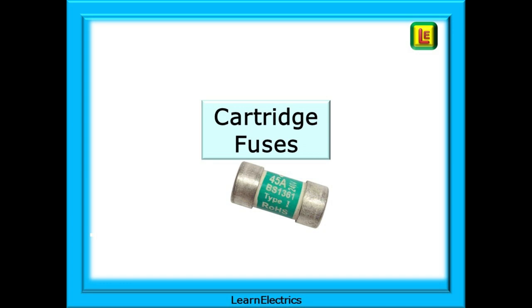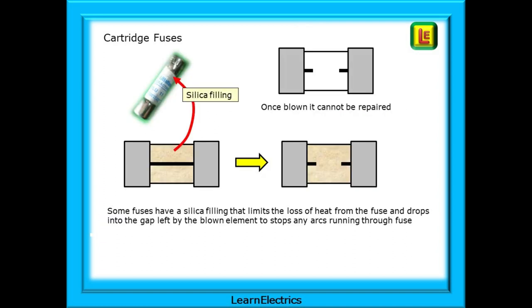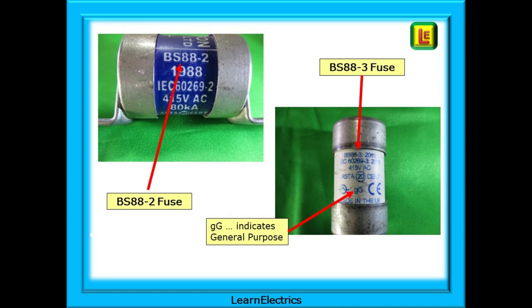Cartridge fuses are very popular and we should look at these next. The fuse element in a cartridge fuse is an accurately blended alloy of different metals and elements, very accurately sized so that the required accuracy and repeatability can be achieved. Each size and type of fuse will have its own unique response to currents that flow through it — such as how quickly it will melt, and whether it will react to motor start-up surges. It's easy to choose the correct size fuse, easy to change, and they have much more accurate fusing. Once blown, a cartridge fuse cannot be repaired — there will be a significant gap between the two end caps and current will not flow. Some fuses have a silica filling that limits the loss of heat from the fuse and drops into the gap left by the blown element to stop any arcs running through the fuse — arc quenching.